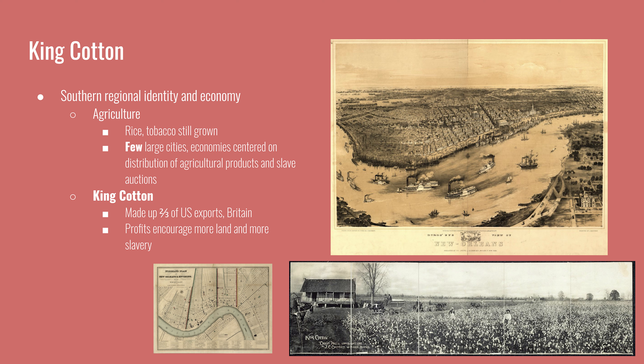Since cotton was greatly responsible for the wealth that existed in the South, it took on the nickname King Cotton. The lure of profits from cotton encouraged more Southerners to move further west to expand their plantations. As Southerners moved into the western territory, the institution of slavery also moved with them.